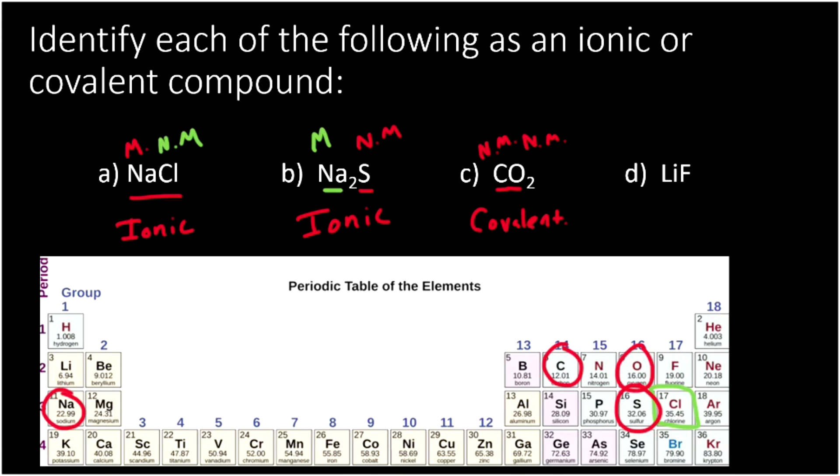Lastly, we see lithium fluoride. Lithium, Li, is found way over on the left side of the periodic table. It's element number three, and it's yellow, it's one of those metals. Meanwhile, fluorine, over on the right hand side, element number nine, is a non-metal. So once again we combine a metal and a non-metal, and that would give us an ionic compound.